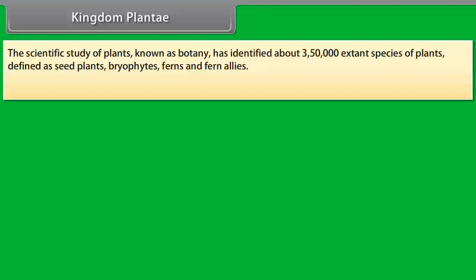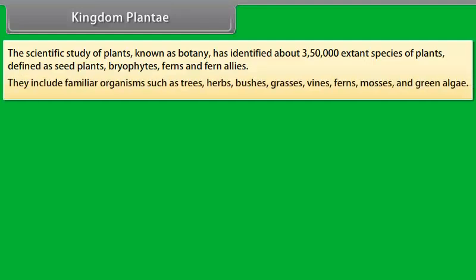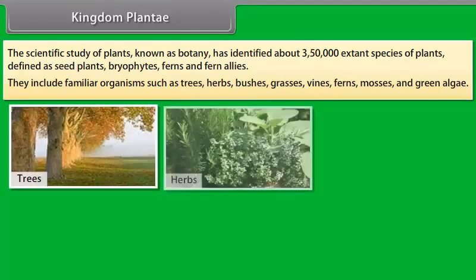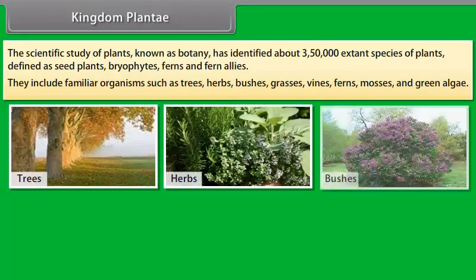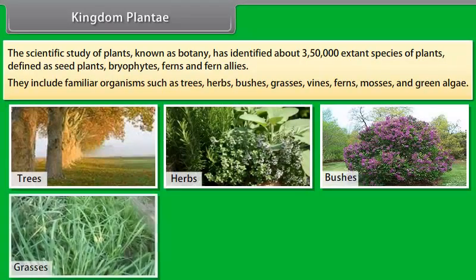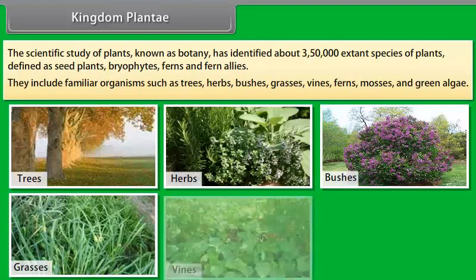Some fungi cause diseases. For example, rust is caused by Perkinia and smut is caused by Ustilago. Penicillium produces antibiotic.